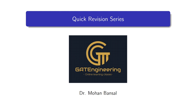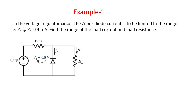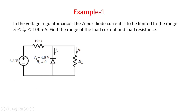Hello everyone, welcome back to the Gate Engineering Online Learning Classes. In this video we will discuss a couple of problems on zener diode. We have given a circuit diagram as a voltage regulator. The zener diode is connected in reverse bias, the applied voltage is 6.3 volts, series resistance is 12 ohms, zener voltage is 4.8 volts, and zener current range is 5 milliampere to 200 milliampere.